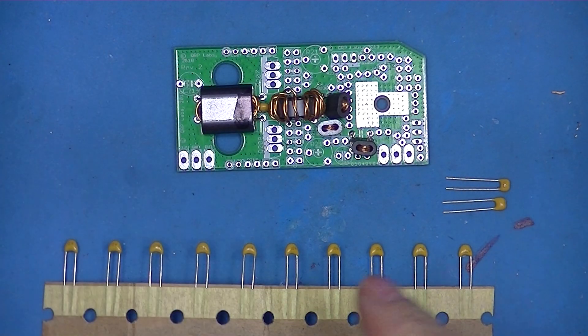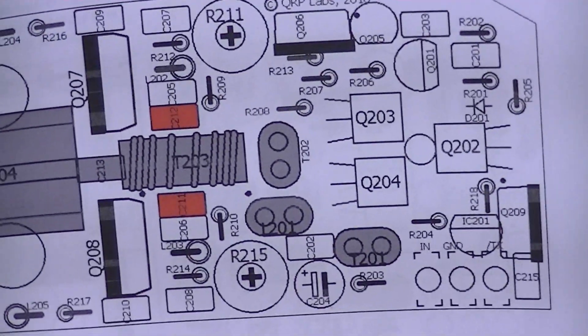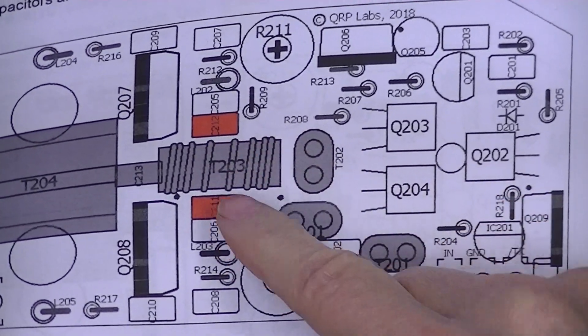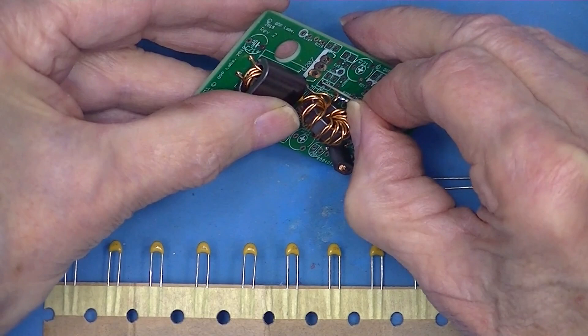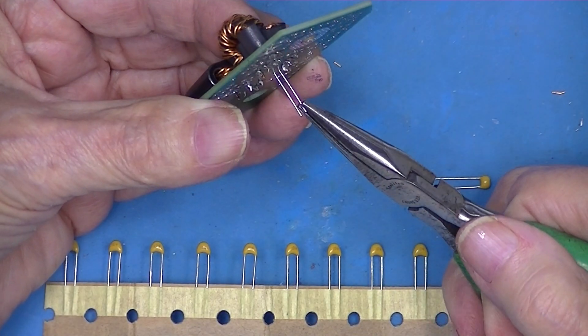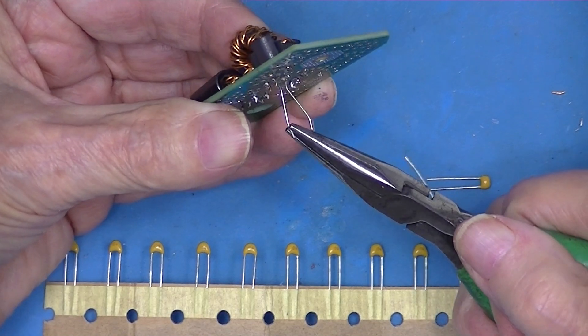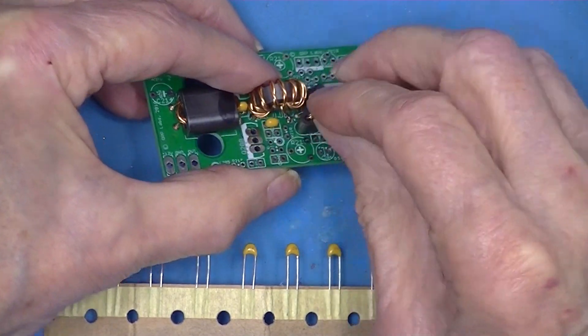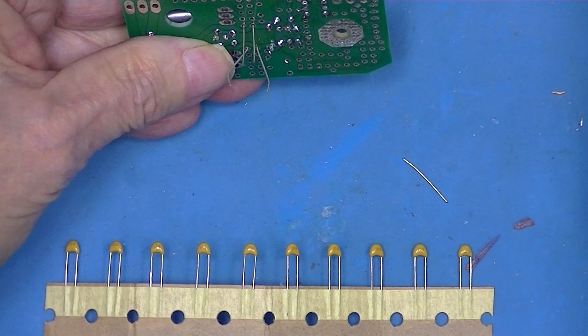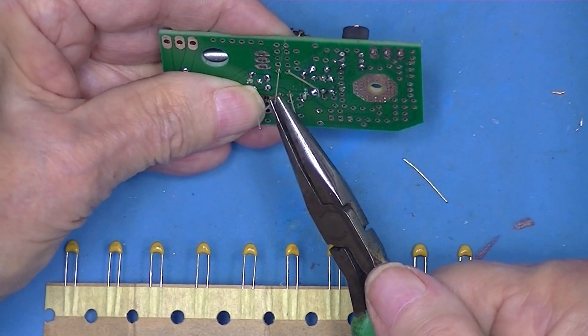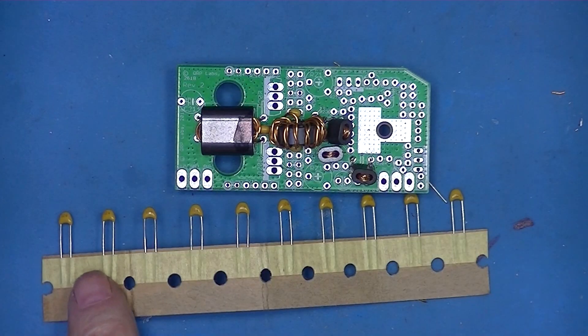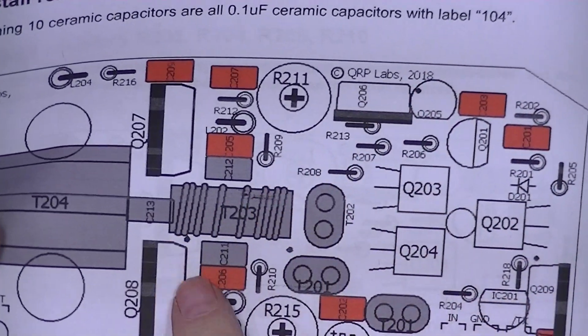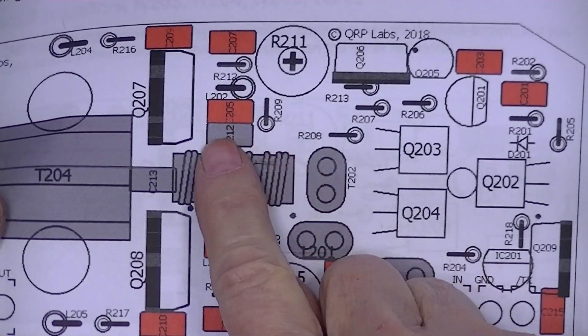Now the 105s go on either side of this toroid. They're the red ones right here. The remaining ten capacitors are these red ones shown here. These are the two I just installed.